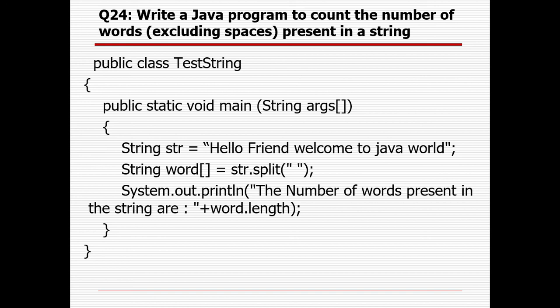Write a Java program to count the number of words excluding spaces present in a string. Suppose there are thousands of words with lots of spaces, but you only want to count words. You define the string and create a words variable, then using the split method with a space delimiter, all spaces are removed. We can print the result and get the length excluding spaces. Similarly, for comma-separated or line-separated files, we can use the split method available in the Java String class.